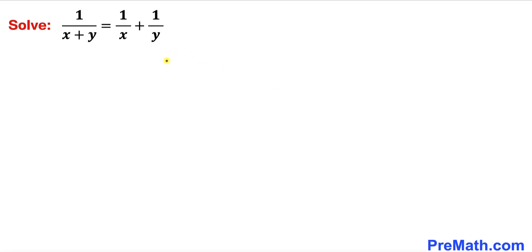In this video we are going to solve this given Olympiad question: 1 divided by (x plus y) equals 1 divided by x plus 1 divided by y. In other words we are going to solve for x and y.